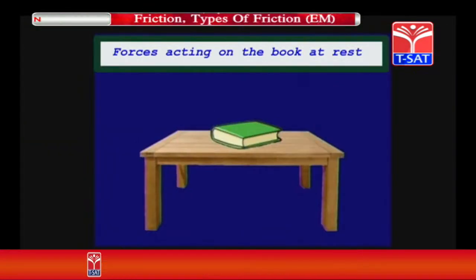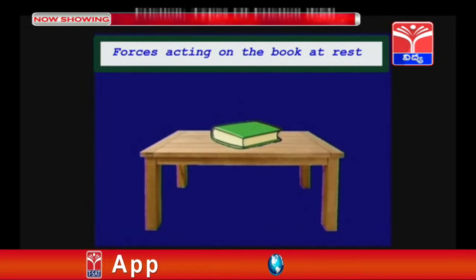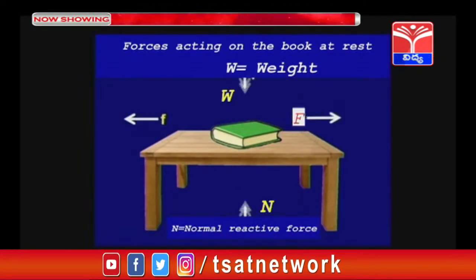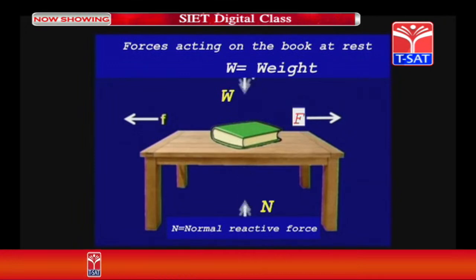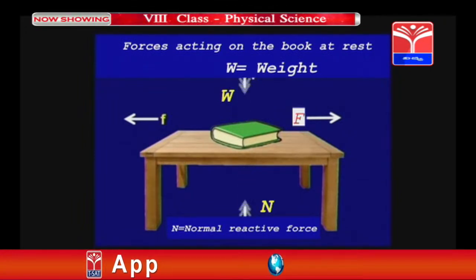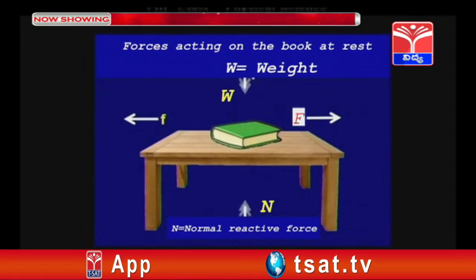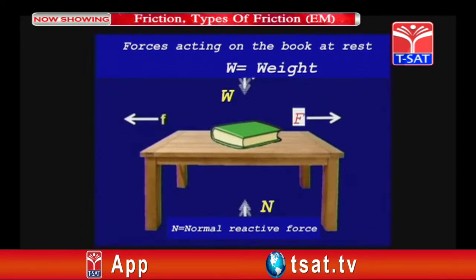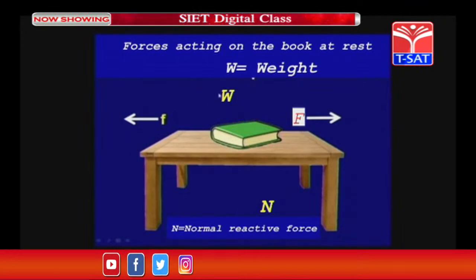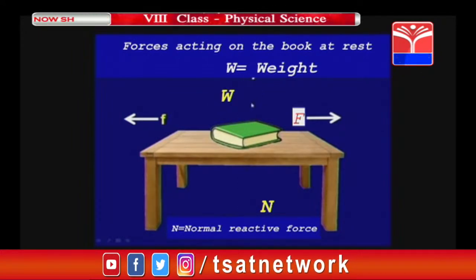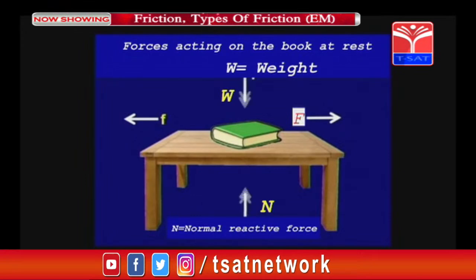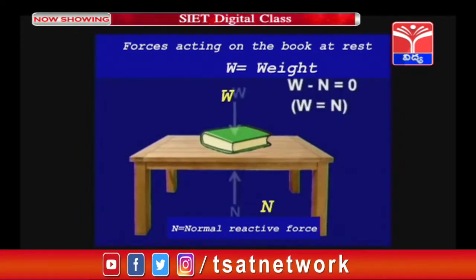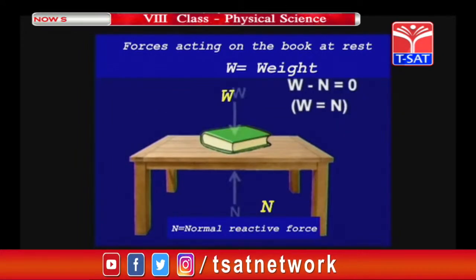Forces acting on the book at rest: the weight W acting downwards in the vertical direction, the normal reactive force acting upwards. In the horizontal direction, the applied force F and in the opposite direction there is a frictional force. The resultant force is equal to 0.